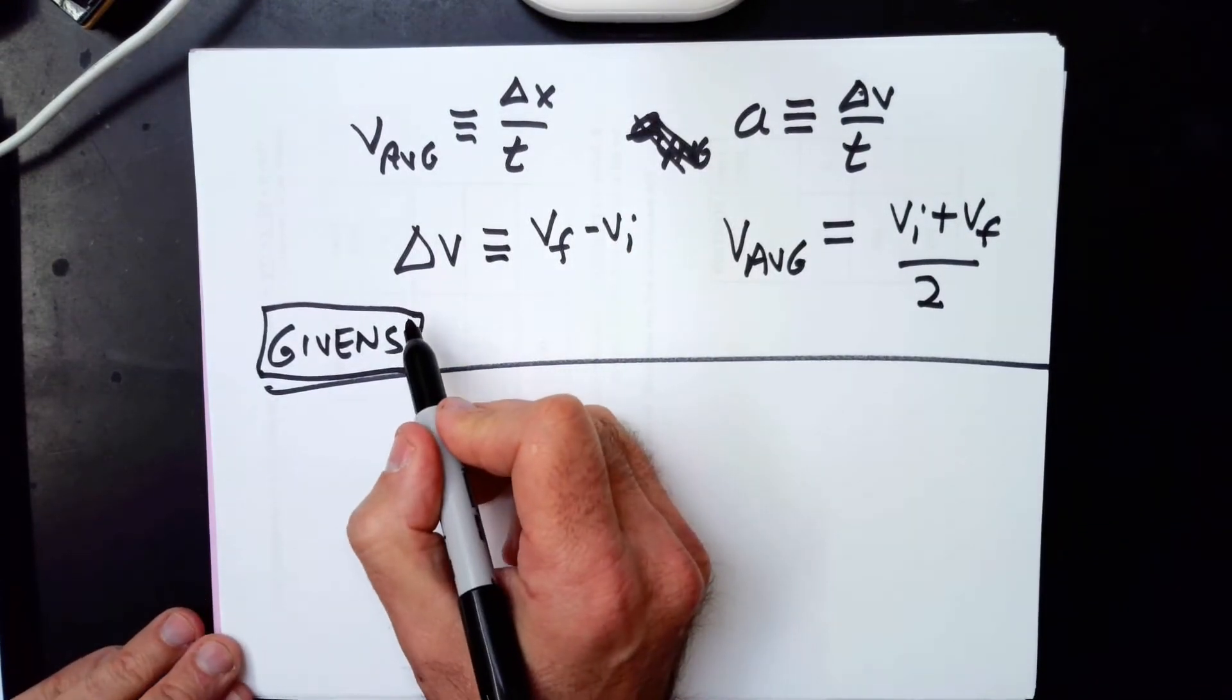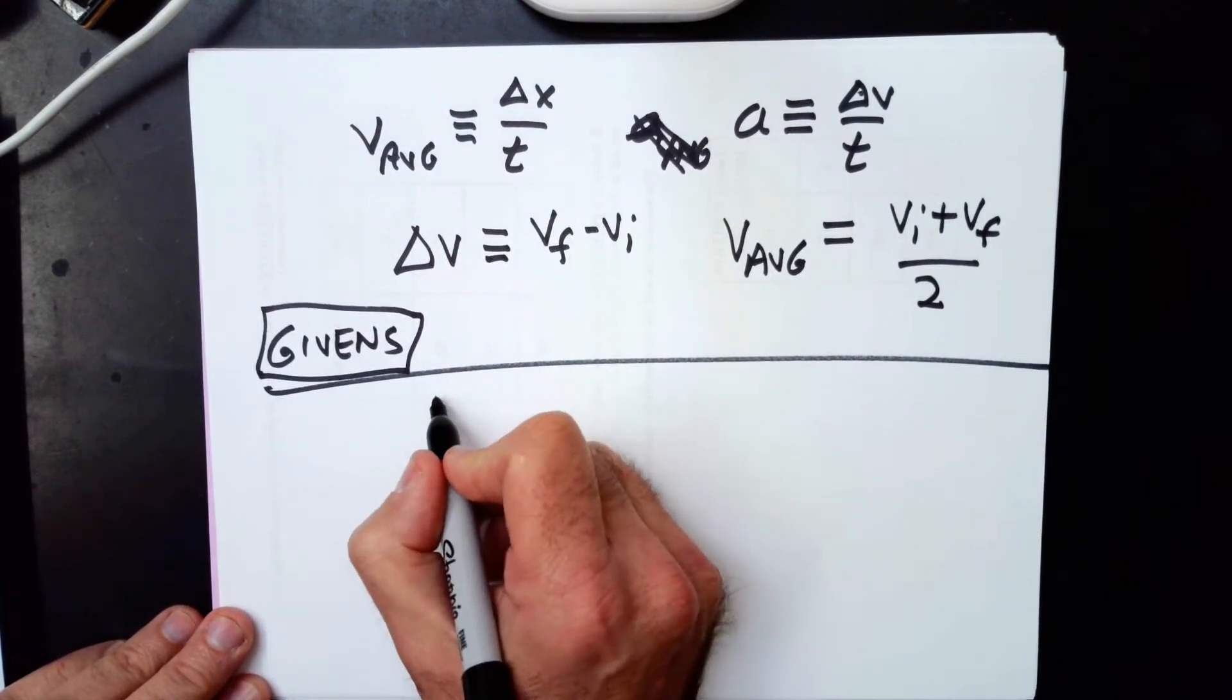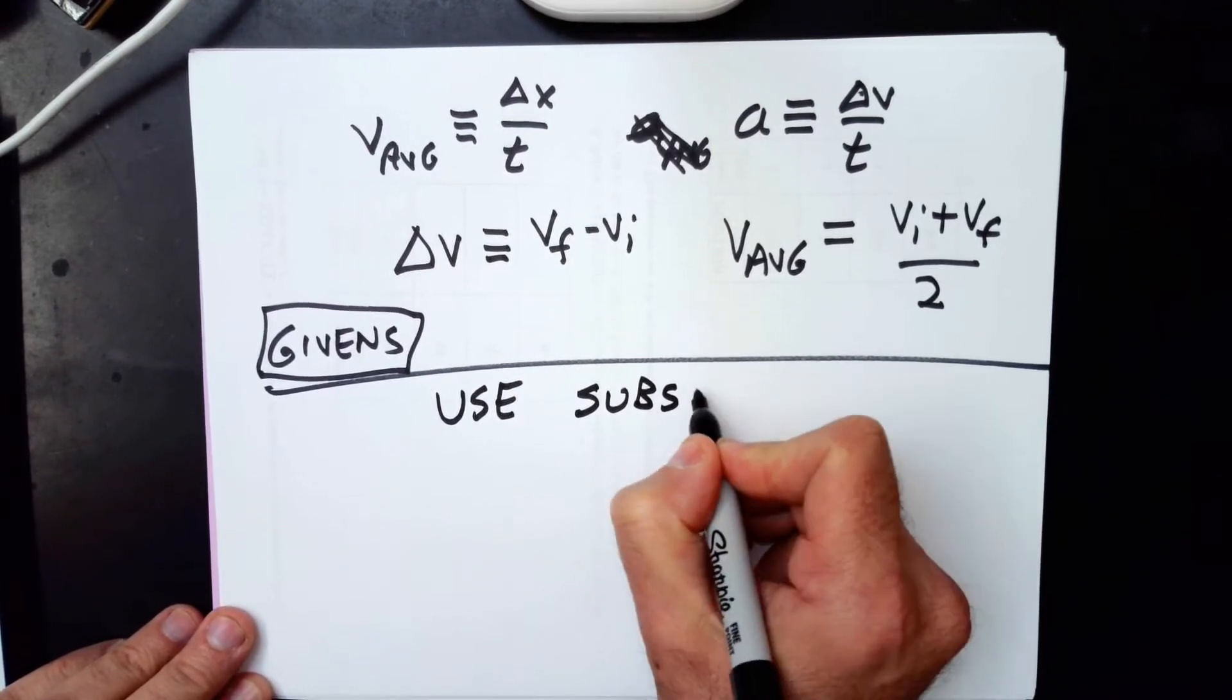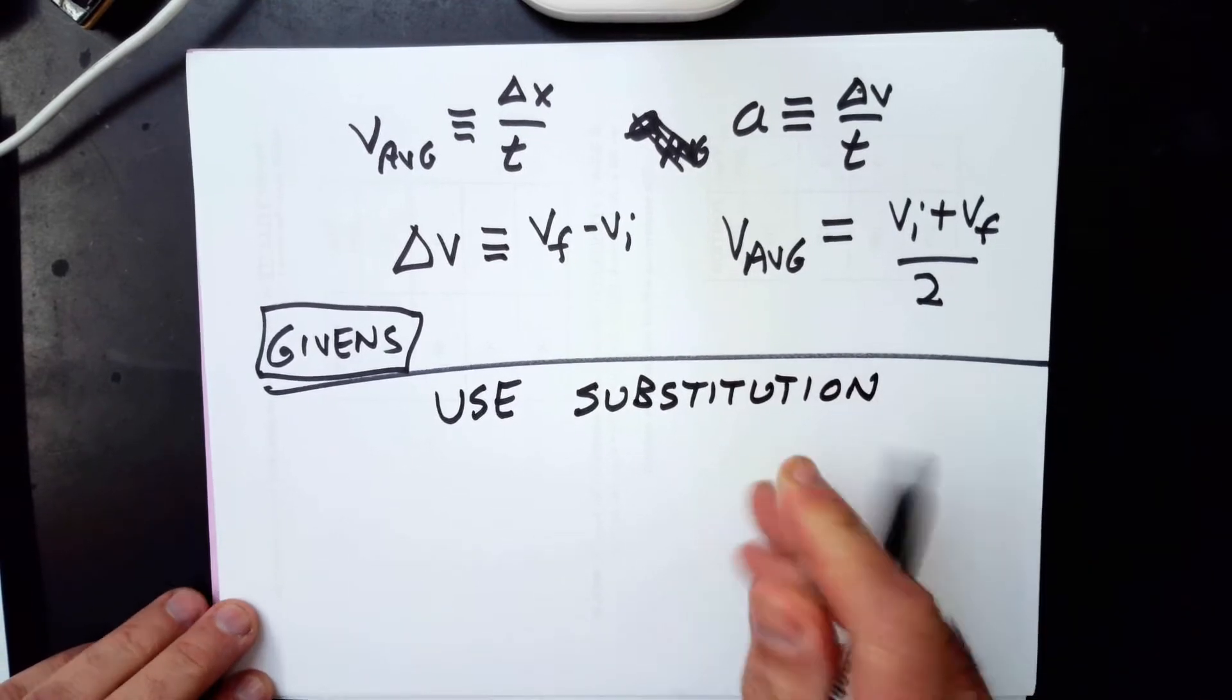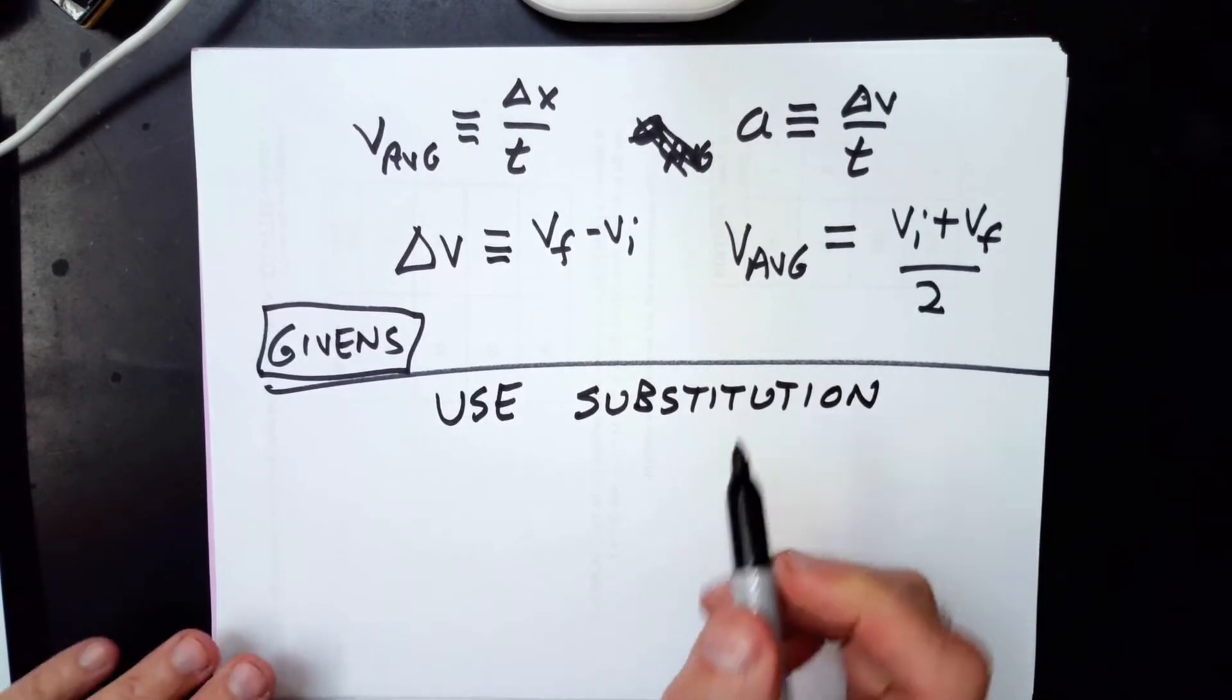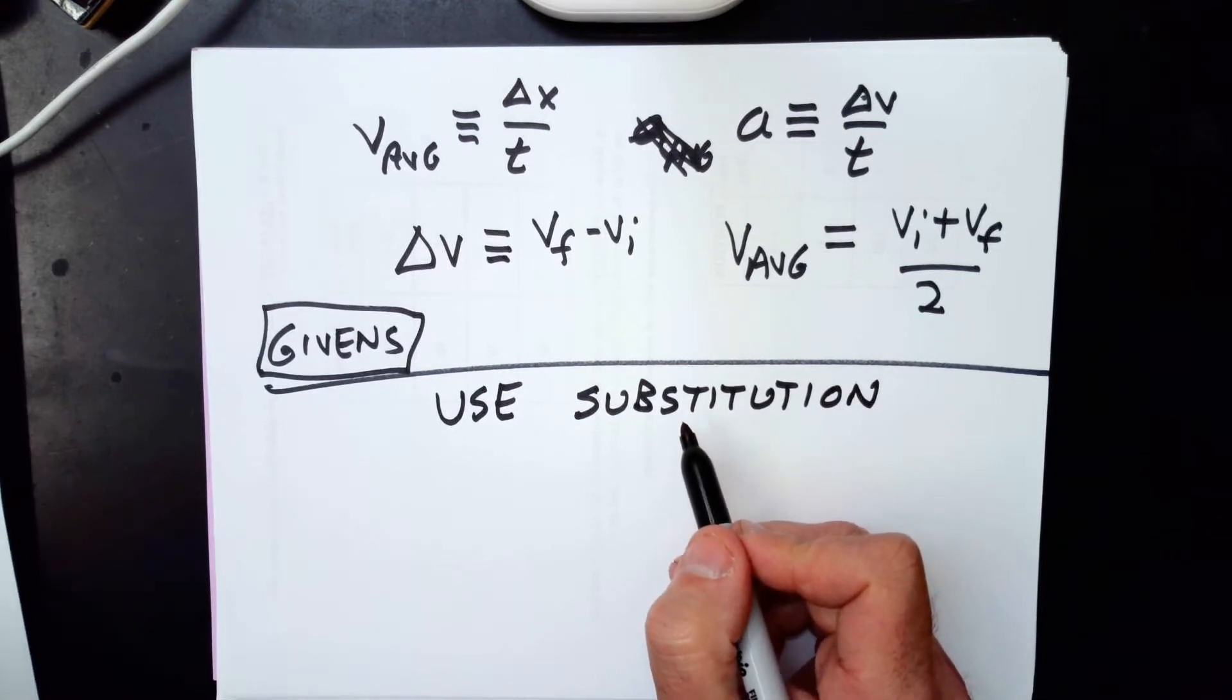So that is the second hint, is that all four of these will be used, and they're your starting points. And the third hint is your tool. You will use substitution, substituting. That's really the main tool. You can do some algebra rearranging, but I take it for granted that that's already a tool you know. But what might be new to you is this idea of using substitution to get the equation you want.